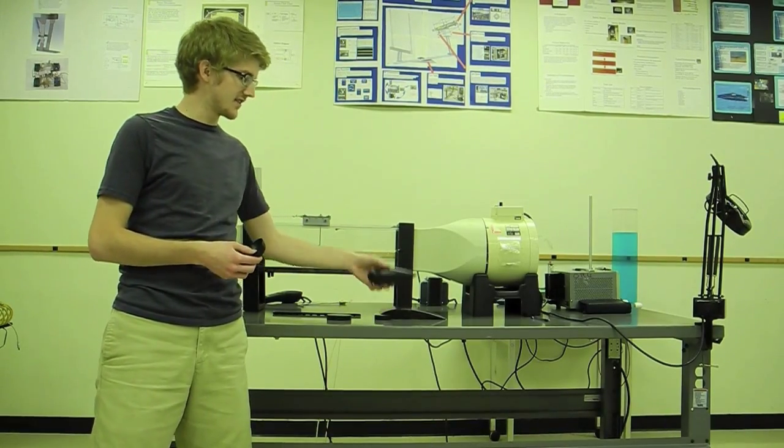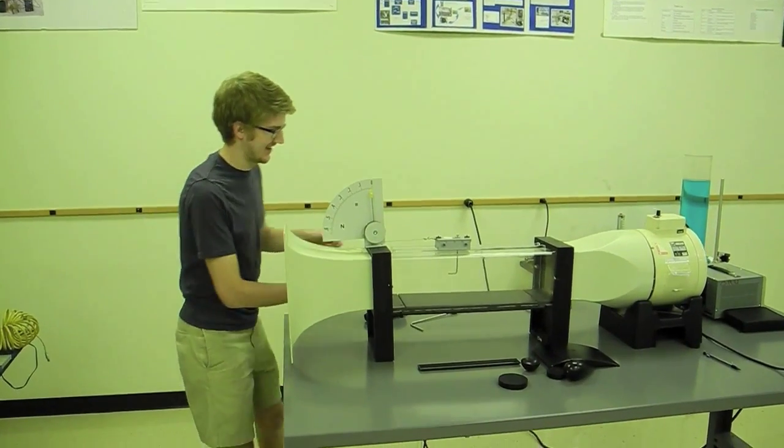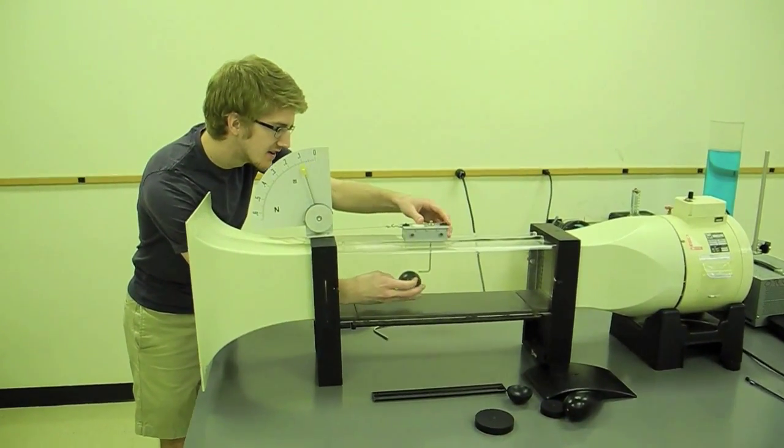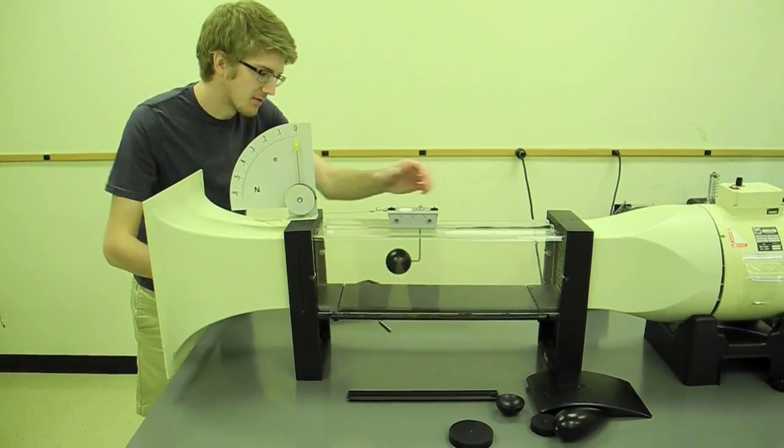To mount the object, in this case we are using the sphere, just get the hole and place it on the metal bar in there.